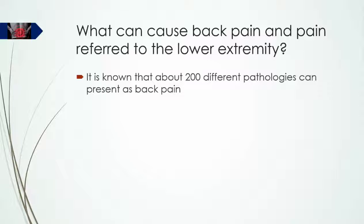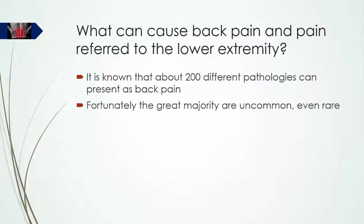Symptoms are what patients complain of, not a diagnosis. Symptoms occur in individuals, and individuals live within a personal, societal, economic, and political context. Context can affect the severity and importance of symptoms. For the purposes of this presentation, it is important to know that there are actually about 200 different diseases or conditions known to produce low back pain as a symptom. Fortunately, most of these are uncommon or quite rare. It is highly likely that you may never see some of them in a full and active professional career. Some are serious and even life-threatening, such as cancer or infection. Fortunately, these are actually quite uncommon.